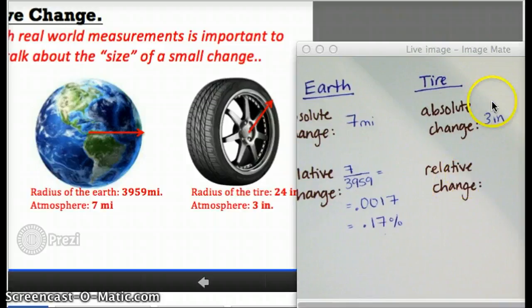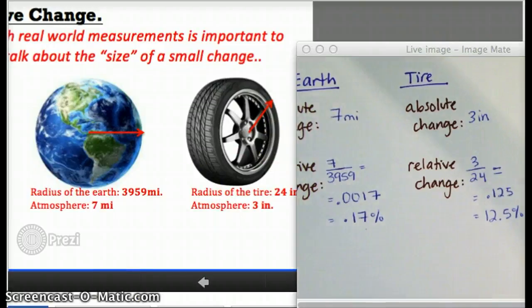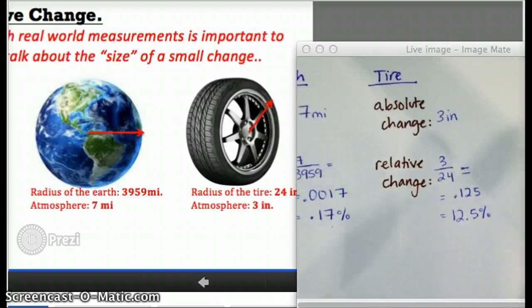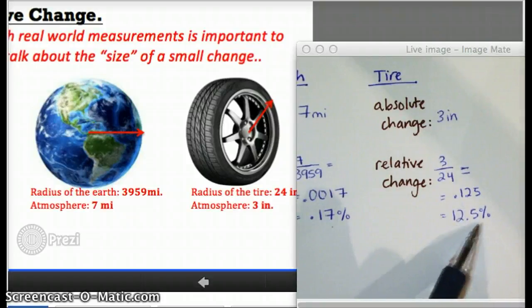But when we put that three inches relative to how big the tire is, we essentially divide it by 24, and that gives us 0.125 as your relative change, which is like 12%. So actually,